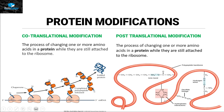On the other hand, post-translational modification means that once the process of translation has ended, the protein is no longer attached to the ribosome, and now the process of changing one or more amino acids or attachment of a non-protein part occurs to this protein. This type of modification is called post-translational modification.